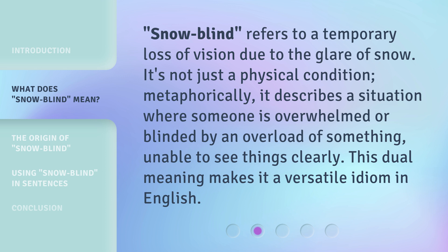Snowblind refers to a temporary loss of vision due to the glare of snow. It's not just a physical condition. Metaphorically, it describes a situation where someone is overwhelmed or blinded by an overload of something, unable to see things clearly. This dual meaning makes it a versatile idiom in English.